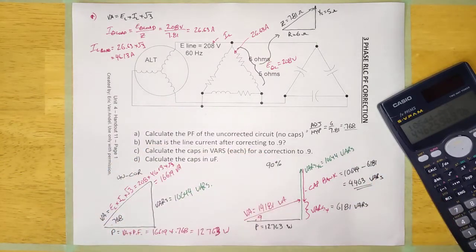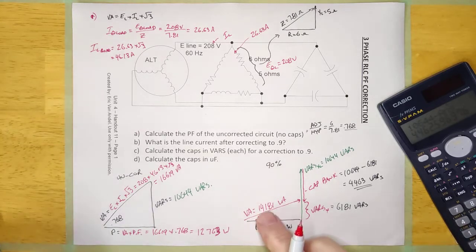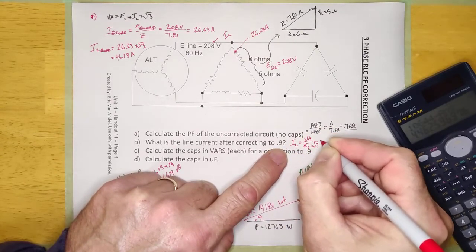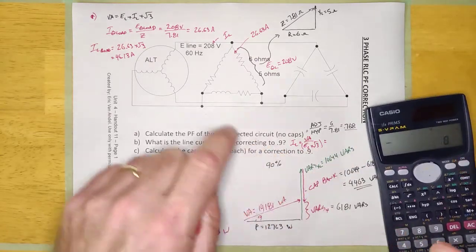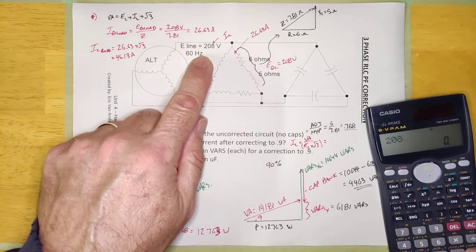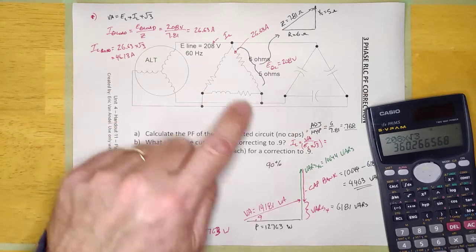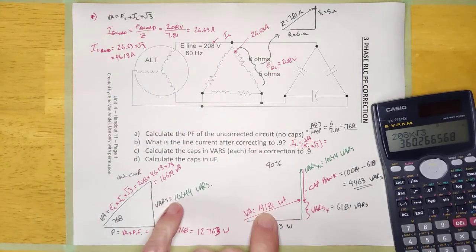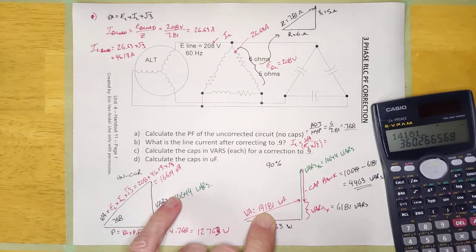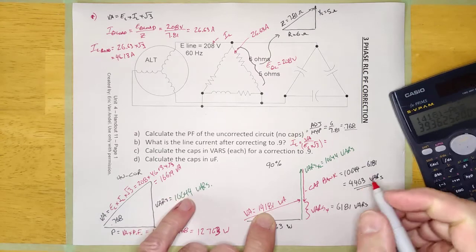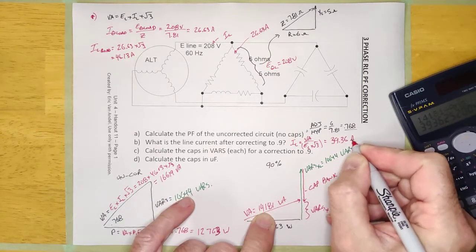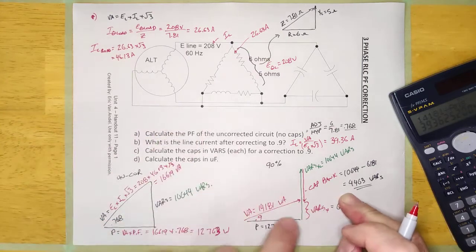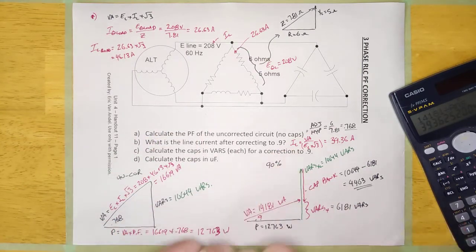What is the line current after correcting to 90%? Well, the line current can be calculated because I know my VA. I line is going to be VA over E line times root 3. E line is going to be 208 times root 3. Then I'm going to go the VA over that. So 14,181 divided by that answer equals, looks like it's going to be 39.36 amps after correction. Now, was 46.13? We've reduced it and we've improved the phase angle. So that's the answer to B.